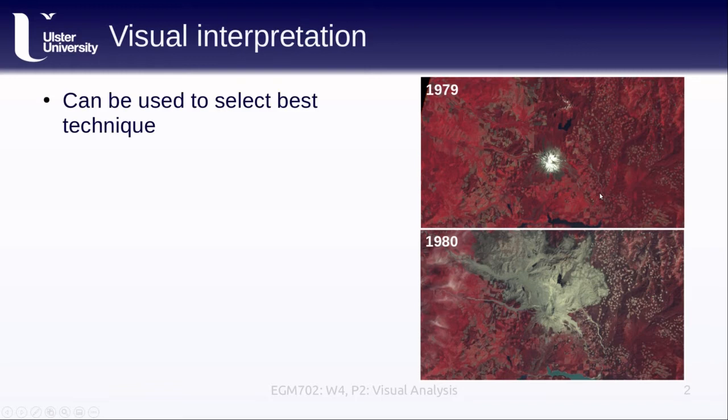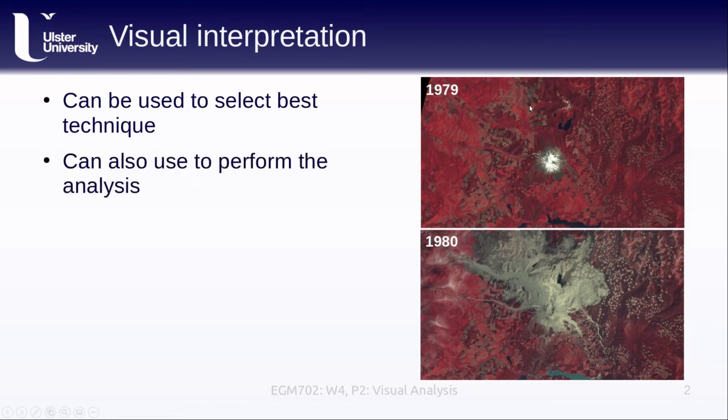So visual interpretation is often used to select the best change detection technique to actually quantify or study changes. We don't always use this technique to actually do the change detection itself, because we're usually not looking at such obvious differences as we see here. But when we do have some obvious differences, we can use visual interpretation to help do the analysis.